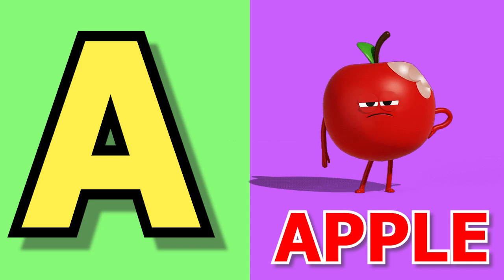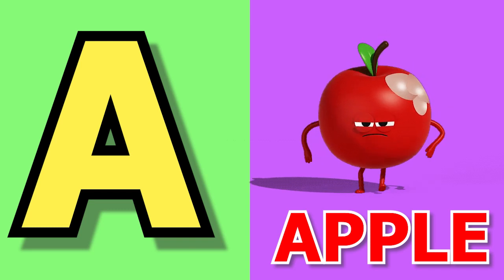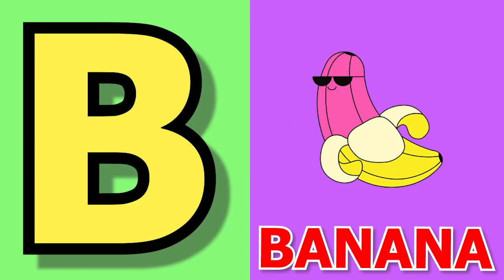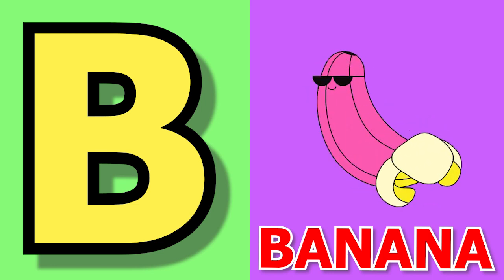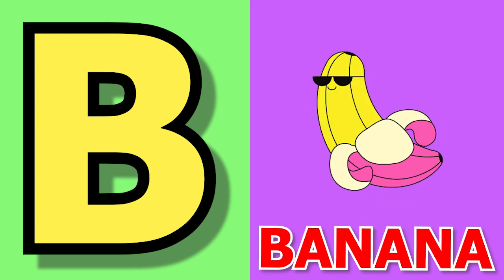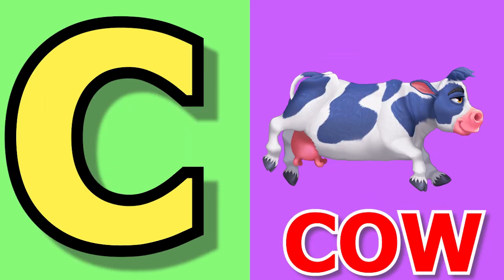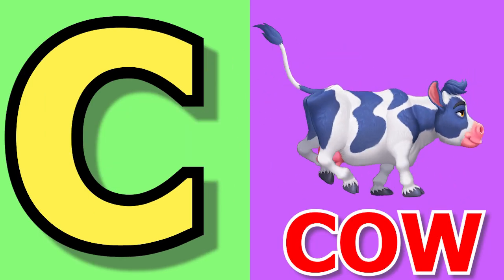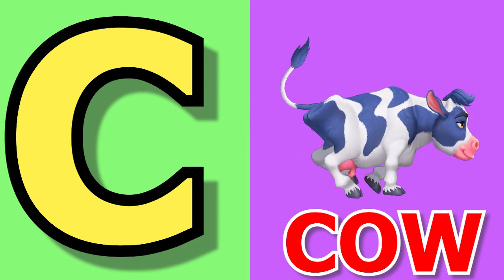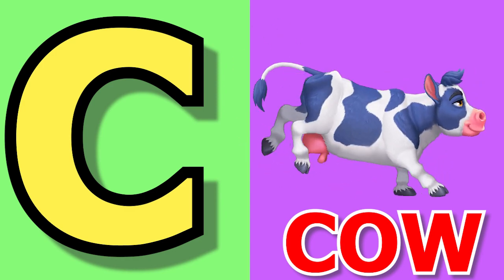A for apple, apple means shape. B for banana, banana means kela. C for cow, cow means gay.